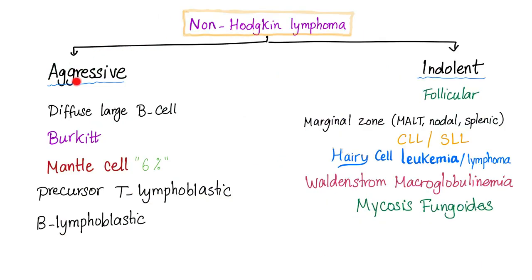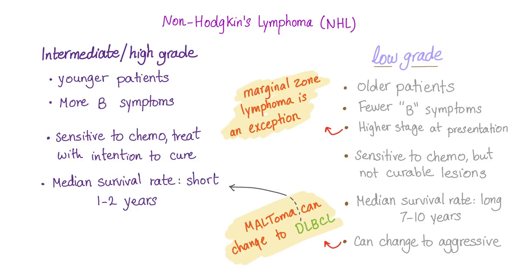Non-Hodgkin's lymphoma is either aggressive or indolent. We have talked about diffuse large B-cell lymphoma, Burkitt's, and Mantle in previous videos — all of these are aggressive. Today's topic is marginal zone B-cell lymphoma, and this type is indolent. Indolent or low-grade lymphomas occur in older patients, with fewer B symptoms and higher stage at presentation. However, marginal zone lymphoma is an exception — it can present in earlier stages. It is sensitive to chemo, has a long median survival, but can transform into aggressive lymphoma. Specifically, MALT lymphoma can transform into diffuse large B-cell lymphoma.